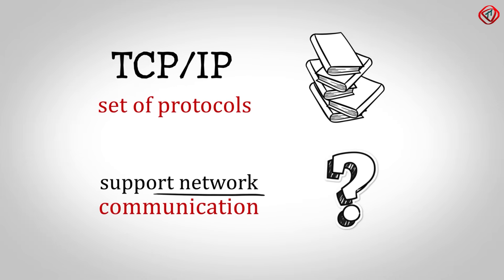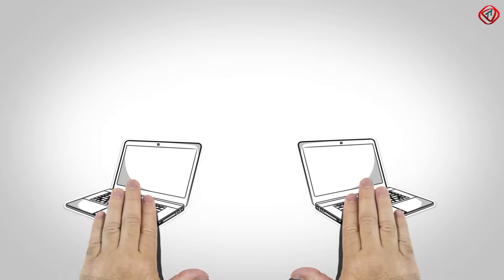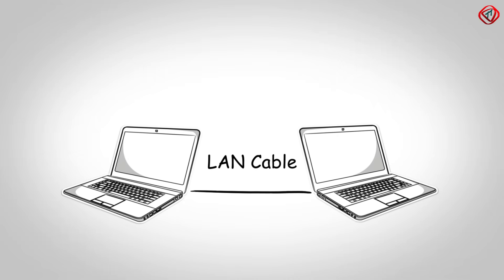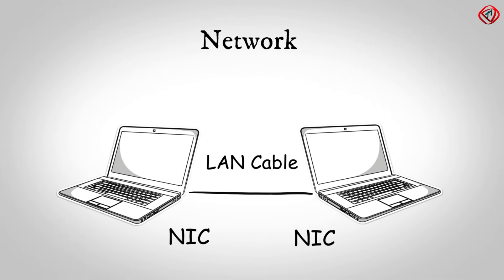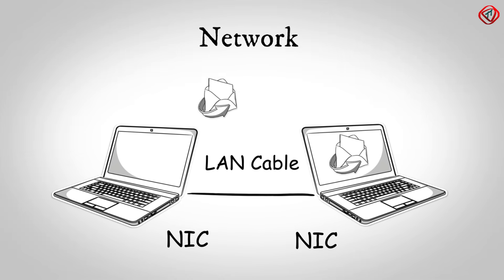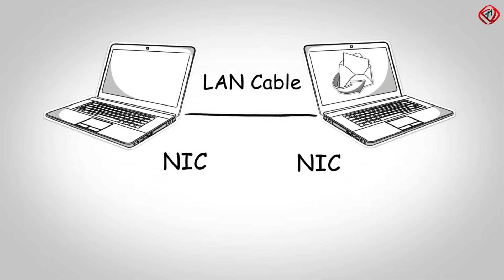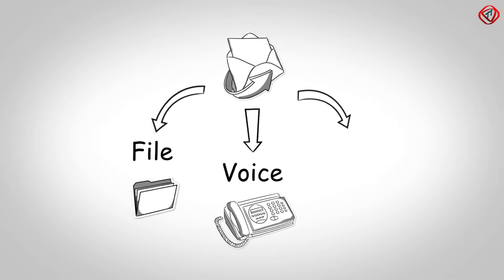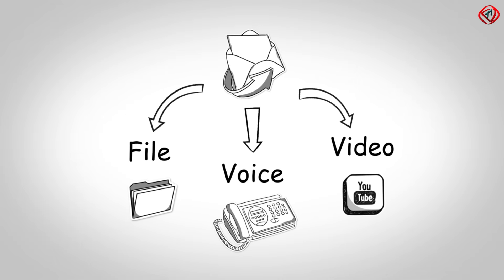But what is a network? And what is communication? In the most basic form, two computers connected via LAN cable sharing data with the help of network interface cards forms a network. And the process of sending messages from one place to another through a wired or wireless medium is called communication. The message can be a file, a voice conversation, a streaming video, or anything which can be communicated in digital form.